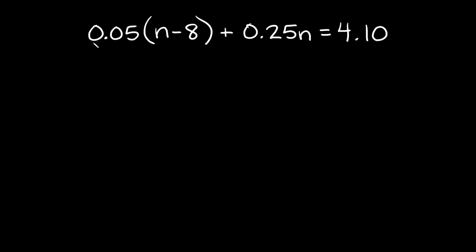The first thing we're going to do is distribute this number into the parentheses. You're going to take 0.05 and multiply it by n and then multiply it by 8. So 0.05 times n is equal to 0.05n and then 0.05 times 8 is equal to 0.4.